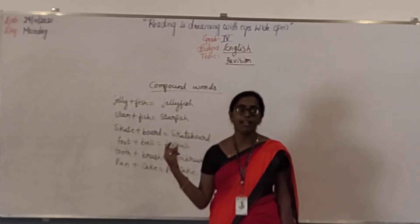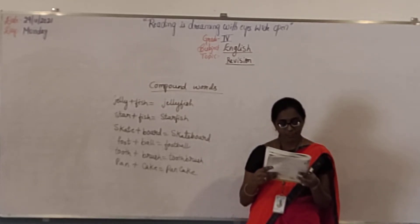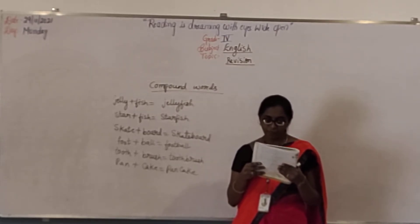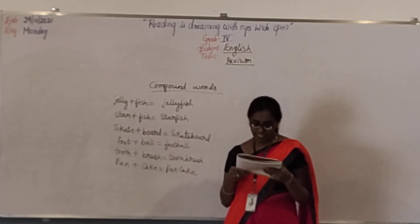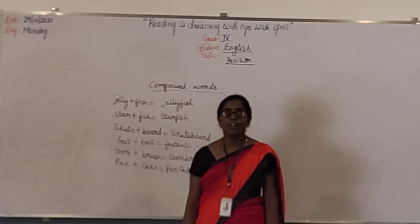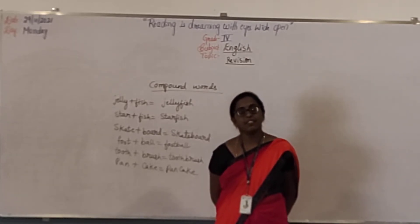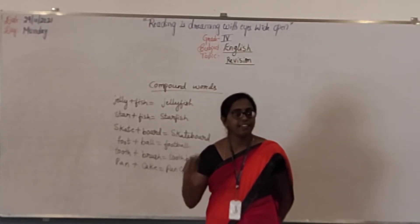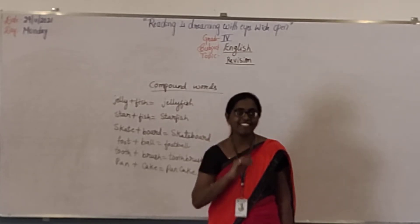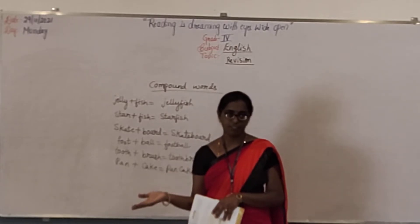First you know countable and uncountable nouns, right? Now I will ask you which are countable and uncountable — you can tell me. Tell me: cats — countable. Then oil — uncountable. Pencils — countable. Hair — we can't count our hair also, right? We cannot count it. That is an uncountable noun.